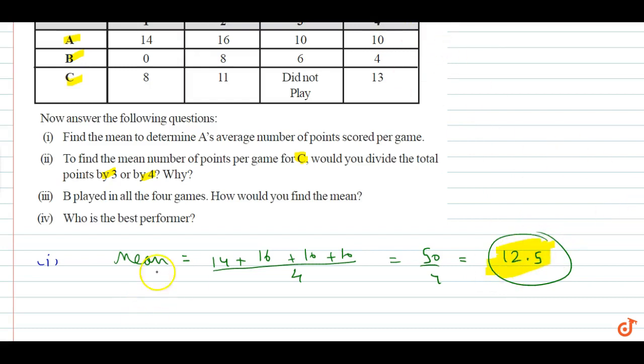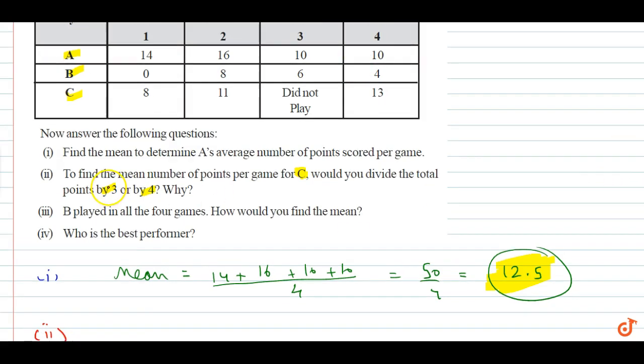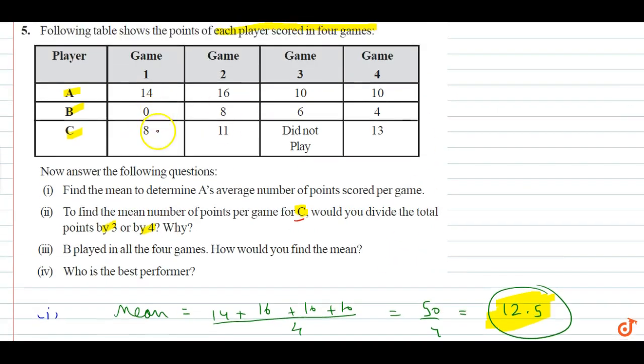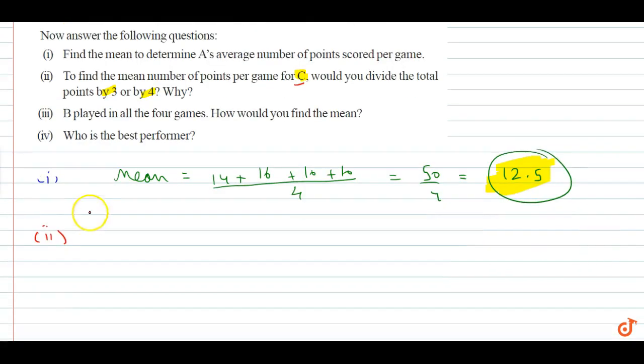Second, what is it saying? To find the mean number of points per game for C, would you divide the total points by 3 or by 4? If you look at C, C played the first game, second game, but third game was not played, and fourth game was played.